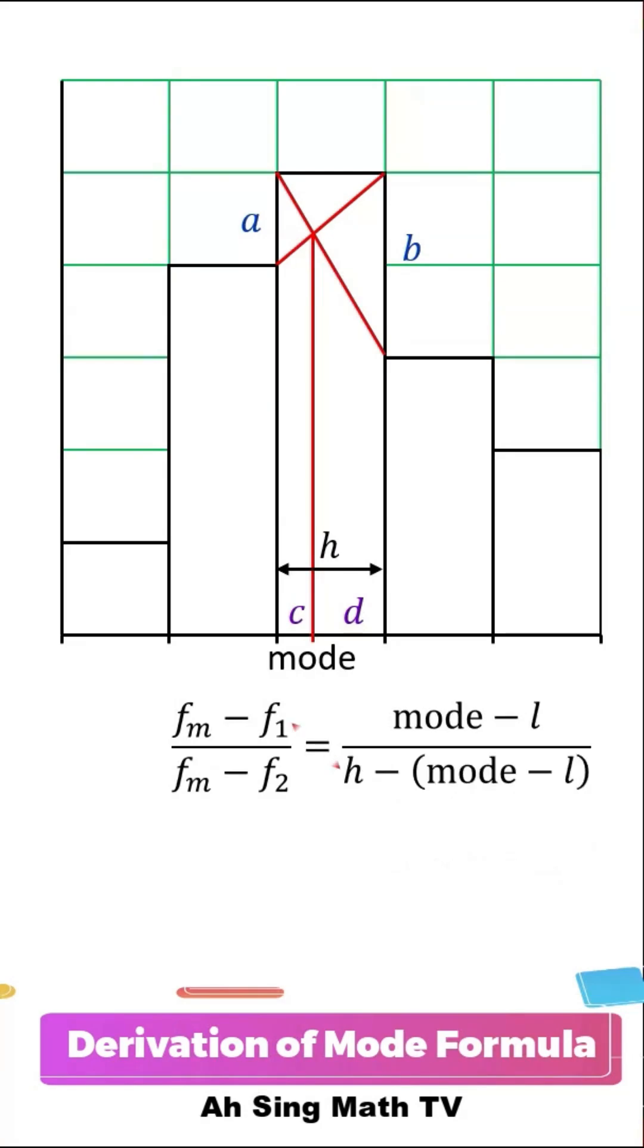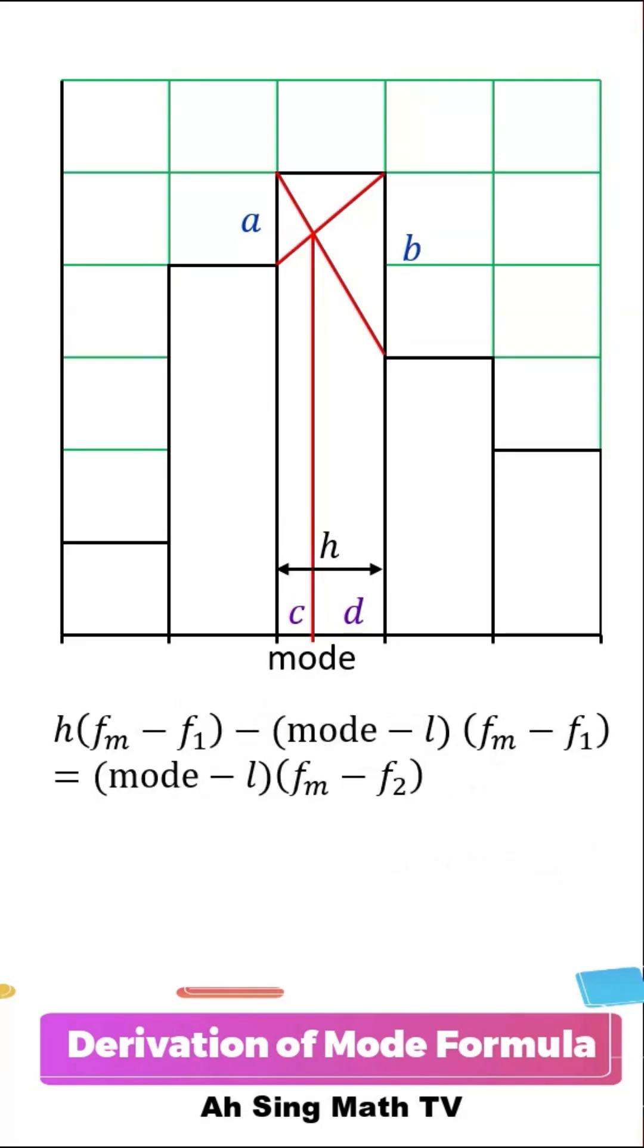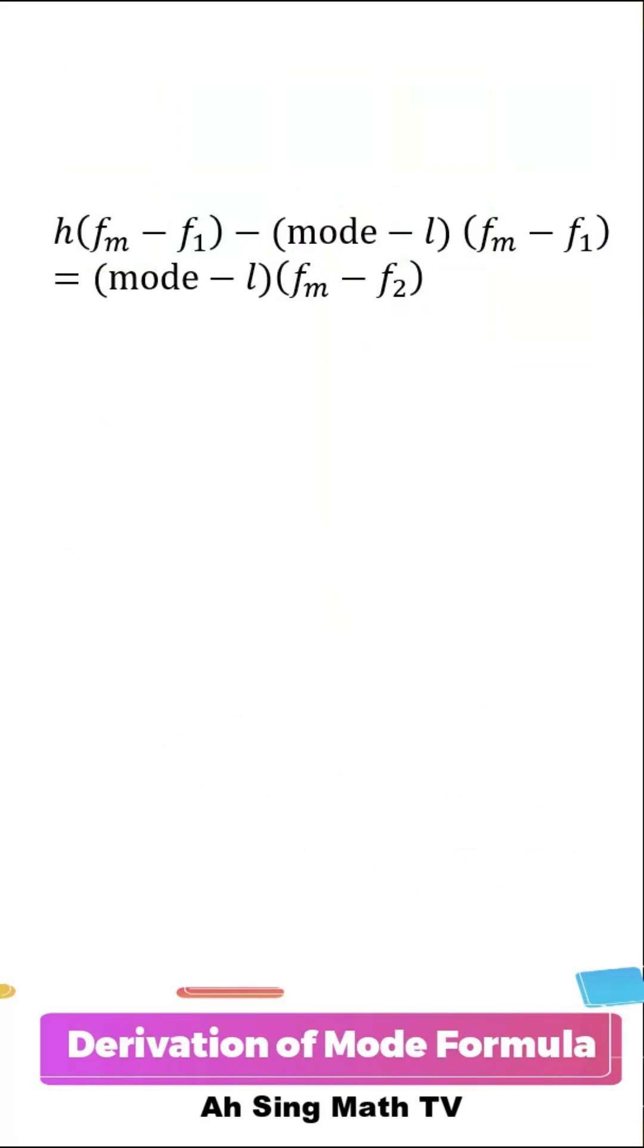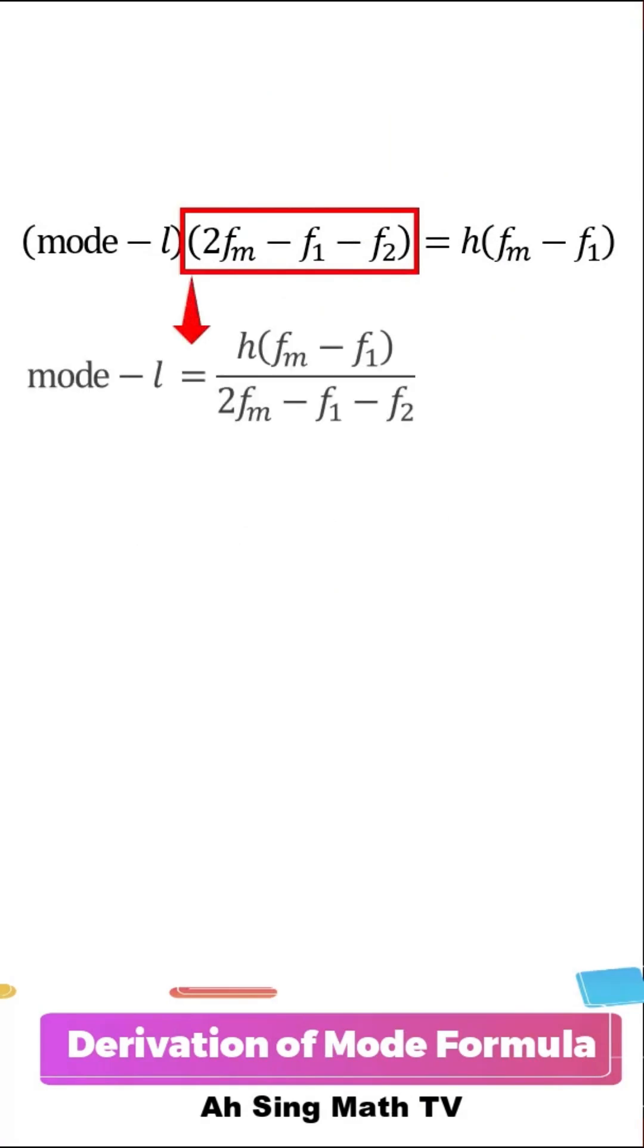Next, let's apply cross multiplication and we obtain this equation. Let's erase the equation, factorize and simplify. Divide both sides by this term, and we obtain this equation.